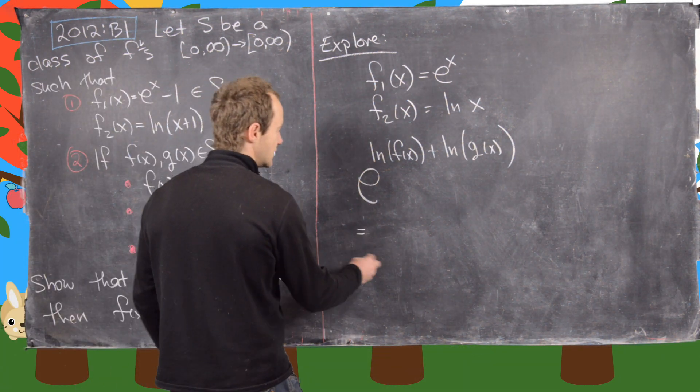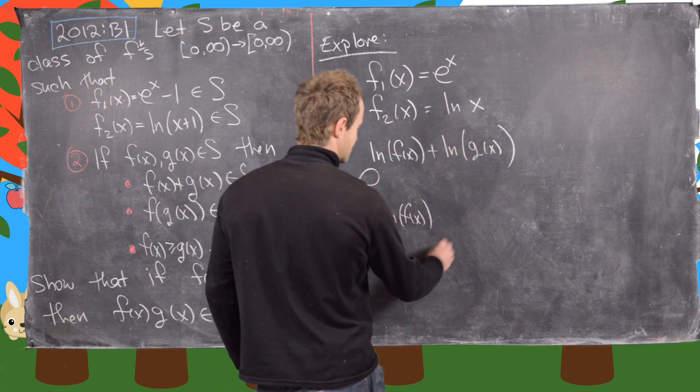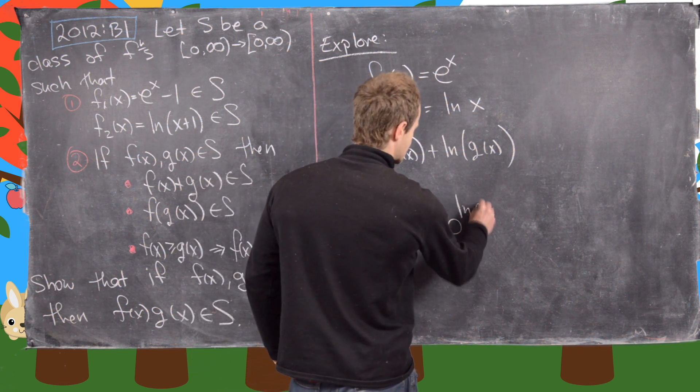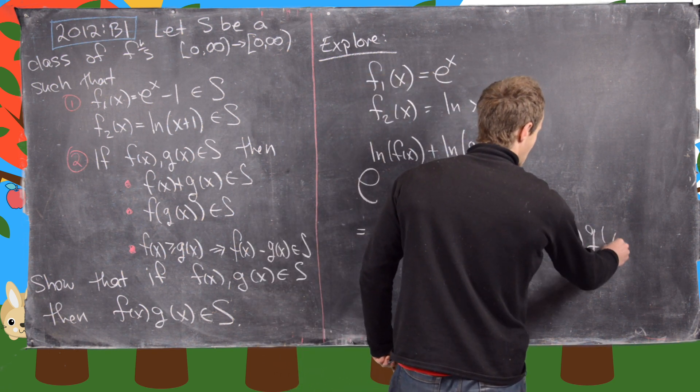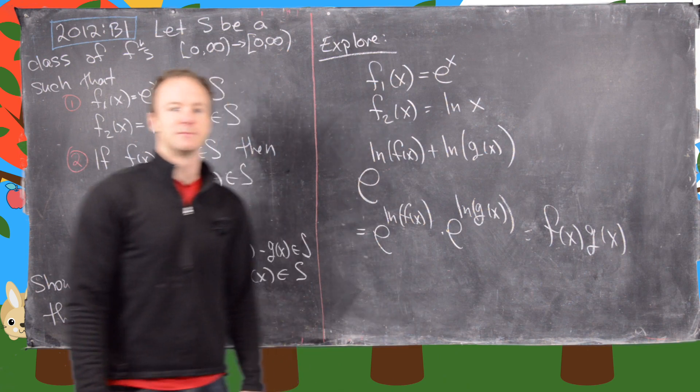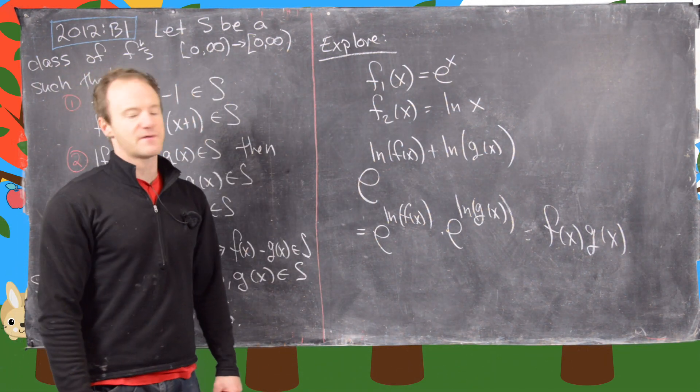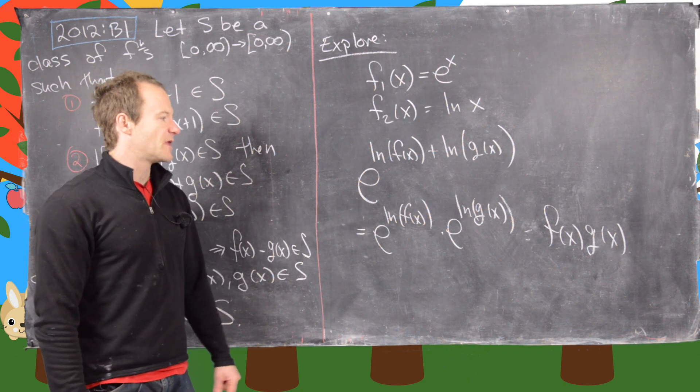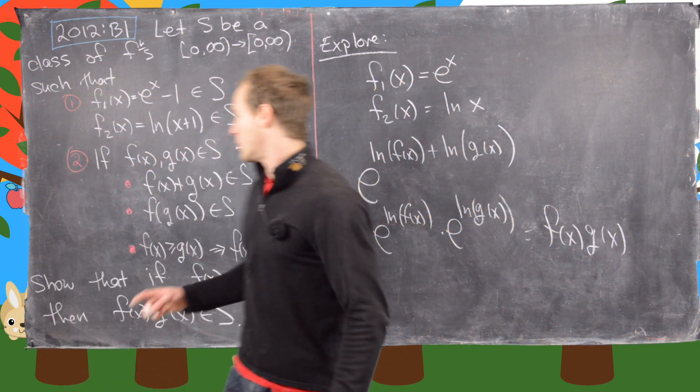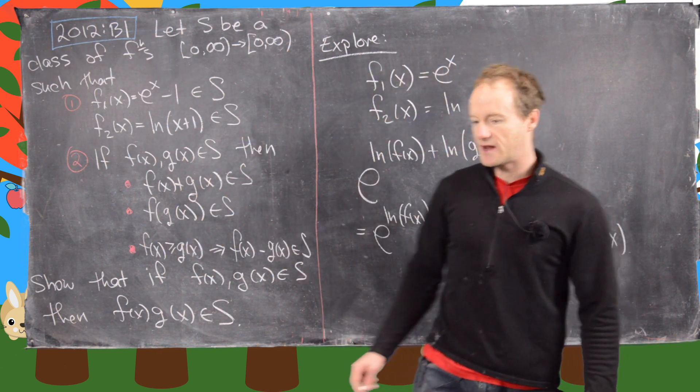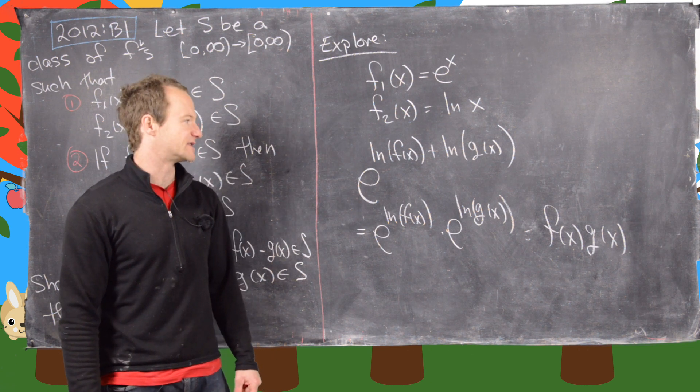So now let's see, notice that this is e to the natural log of f of x times e to the natural log of g of x, but that's exactly equal to f of x times g of x. Now, of course, this doesn't solve the problem because we've simplified f1 and f2, but this should give us some motivation for how to play around with these characteristics of our set in order to arrive at the point where we get the product of two functions inside the set.